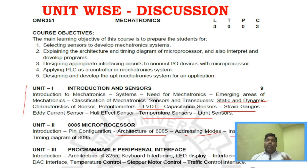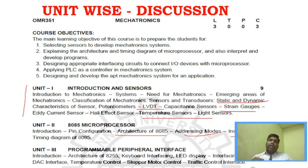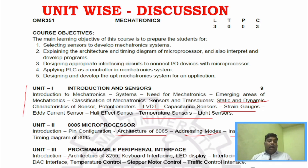Unit 3 is a very important unit. You will study about the Programmable Peripheral Interface (8255). The architecture of the 8255 is a sure-shot topic — you must study it thoroughly. There are interfacing videos available in the microprocessor playlist link shared in the description. The architecture and peripheral interfacing topics are the most important areas to focus on in Unit 3.